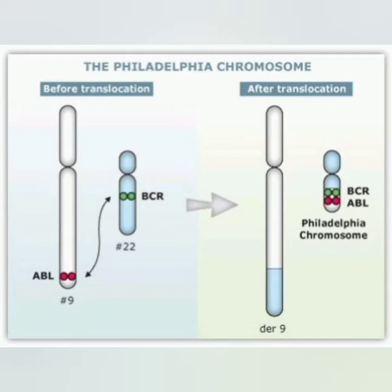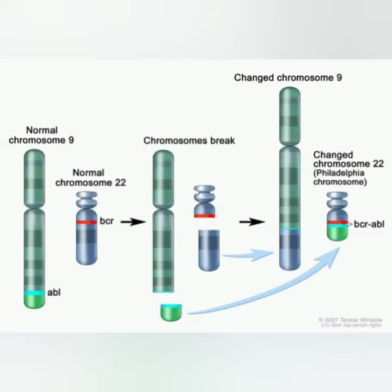In CML, there is a reciprocal translocation between chromosome 9 and chromosome 22. The ABL gene from chromosome 9 is translocated into the BCR region of chromosome 22, resulting in the formation of a hybrid ABL-BCR gene. This hybrid produces a protein with a molecular weight of P210 or P180.